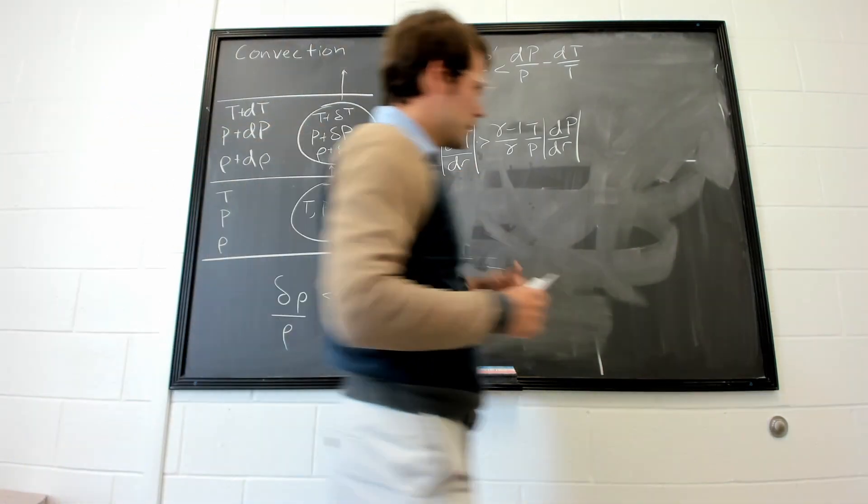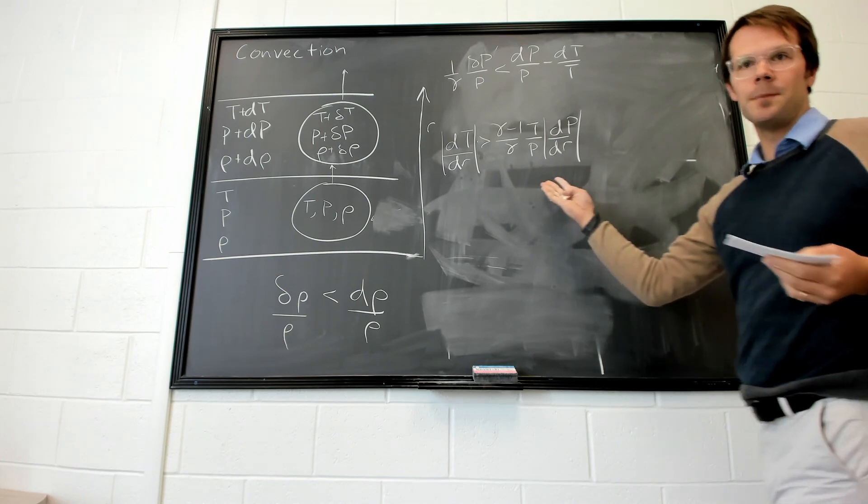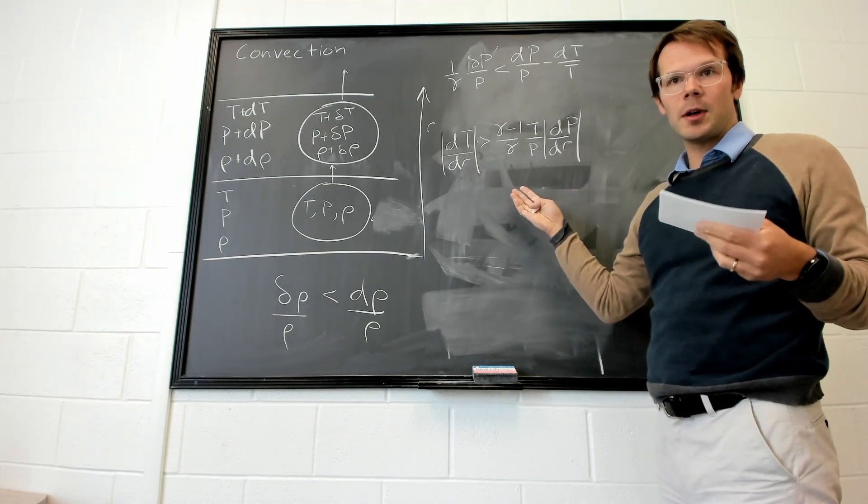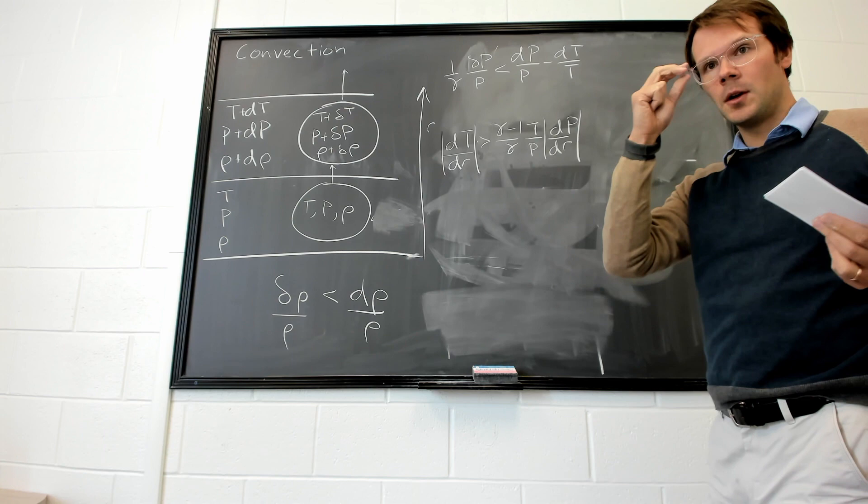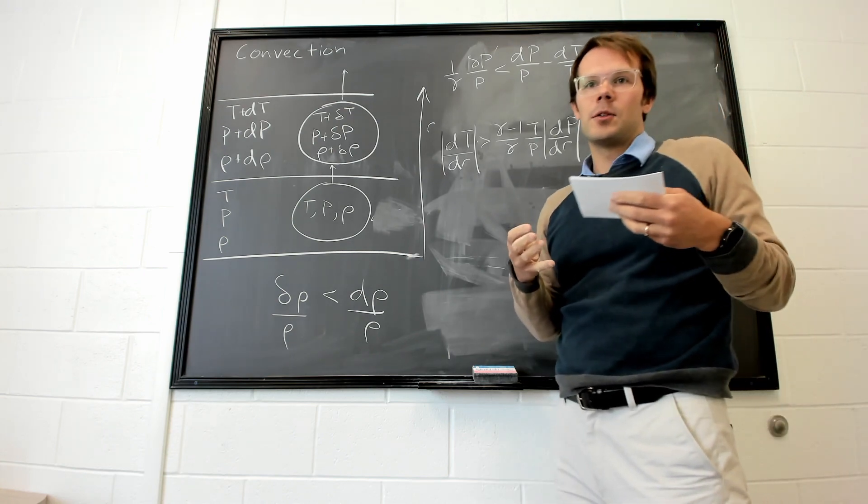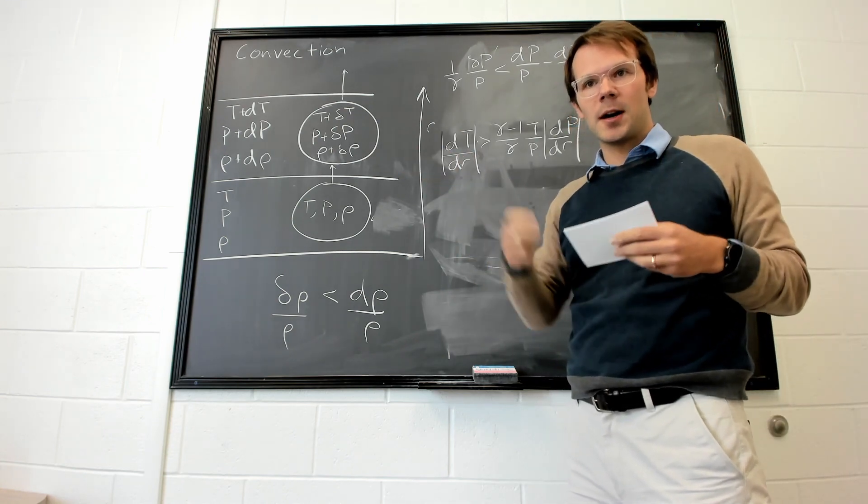So what are the conditions in stars where this might happen? In stars where we have a large opacity. Opacity is the mechanism by which radiation is tied to matter.